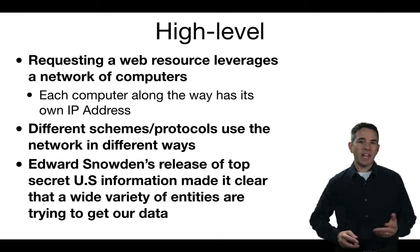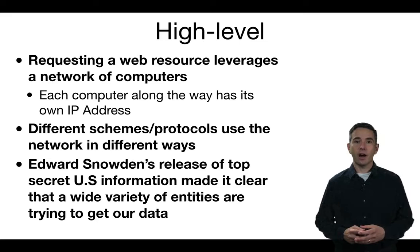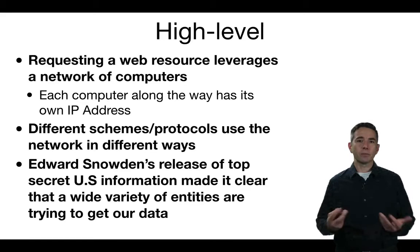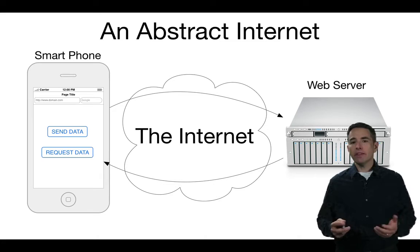Depending on which scheme we use in our URL — HTTP or HTTPS — the way the networks get used and the path gets constructed is slightly different. There's been a lot of discussion in the news about privacy and the ability of different organizations and actors to get information on the internet. Edward Snowden's release of top-secret US information made it clear that there are a lot of entities trying to get our data, so this will give you a mental model for how that might happen and how it interacts with designing networked applications.